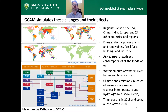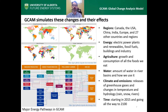GCAM includes electric power plants and renewable resources. It includes fossil fuels — oil, coal, natural gas — as well as demands for energy from buildings and industry. It has an agricultural component, simulating the growth and consumption of all the foods that we and our animals eat. It simulates water resources, the amount of water in river basins and how we use it. It also simulates climate and emissions — releases of greenhouse gases like carbon dioxide and methane — along with changes in temperature and hydrology. It simulates in five-year time steps from 2015 all the way to 2100.